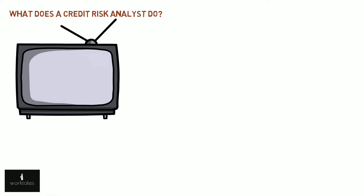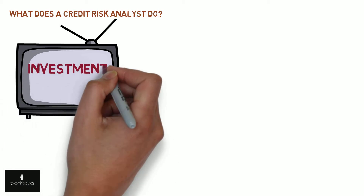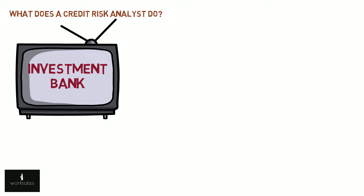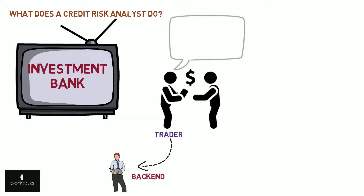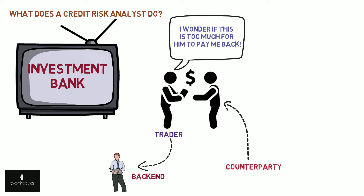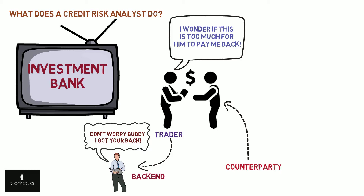First, let's look at an investment bank. Most of the credit risk analysts in an investment bank work at the back end of traders, which means the analyst assesses the credit worthiness of the counterparty of their trades and suggests if the amount of exposure against this counterparty is okay or not. Counterparty is the opposite party in any transaction — it can be anything ranging from an individual to another investment bank.